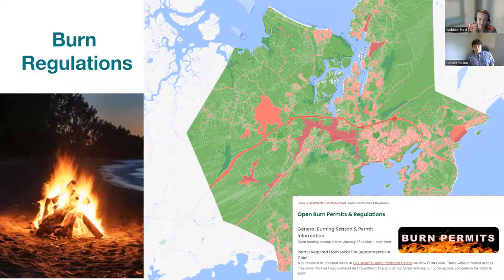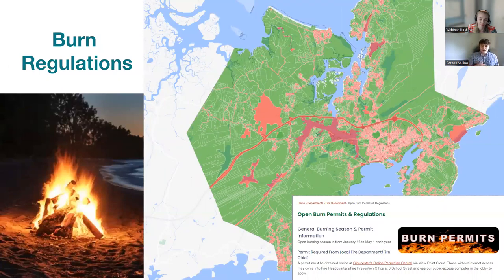Next we have Gloucester, Massachusetts's burn regulation map — a pretty standard and intuitive map where you don't even really need a legend to understand it. Green areas are burn-permit-permitted areas; red areas are non-burnable areas where you cannot do any open burning. The legend also links to the city's open burn permits and regulations. You can see that most of the downtown city area of Gloucester is off limits, and as you go further out, you're more free to burn at your leisure.